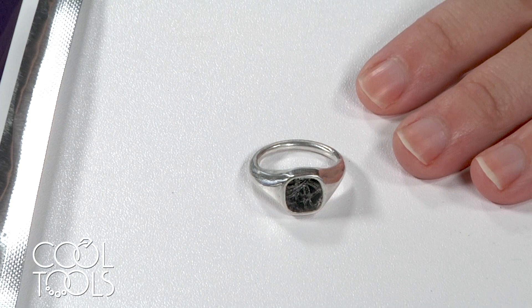Hello everyone, it's Karen at the Cool Tools Studio. Today we're going to be making an EZ960 ring with an enamel inlay that's been accented with fine silver painting powder.